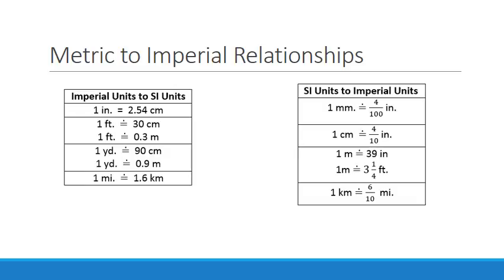Metric to imperial relationships. So you can see on my chart on the left is imperial units to SI units. So one inch is approximately 2.54 centimeters. So it doesn't translate nicely, really. That's why we'll have to kind of have estimates here. And the equal sign with a line over top really just means it is an estimate, or approximate is what I should say. Meaning it's not exact, but it's really close to that. And we've rounded the numbers just so it's a little bit easier for calculations. So one foot is about 30 centimeters, or you could say 0.3 of a meter. One yard is approximately 90 centimeters, or 0.9 of a meter. And then one mile is roughly 1.6 kilometers.